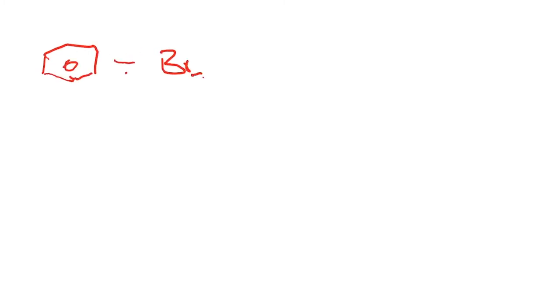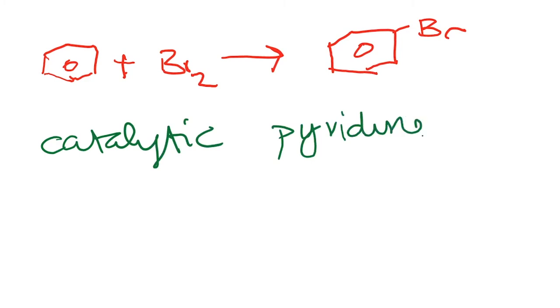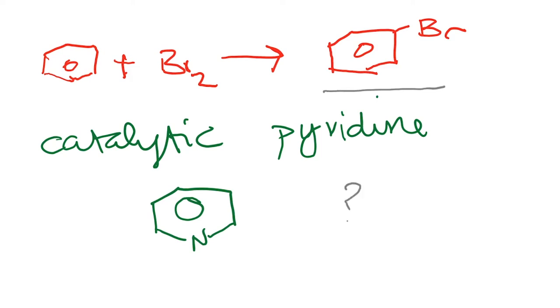Let us start this part of the lecture with a problem. We all know that when you react benzene with bromine, there is basically no reaction if you do it in the dark—you need a Lewis acid such as AlCl3. But this reaction to give bromobenzene is possible if you add a small catalytic amount of pyridine. The structure of pyridine has a nitrogen. The question is: what is the mechanism of this reaction? Work on this, and we will take it up in the next few lectures.